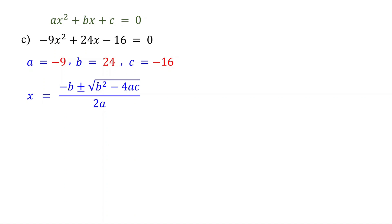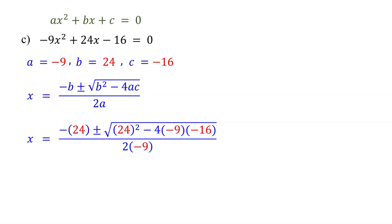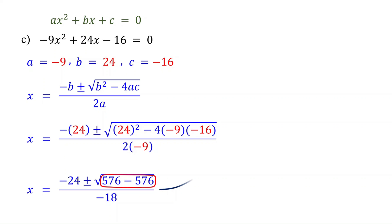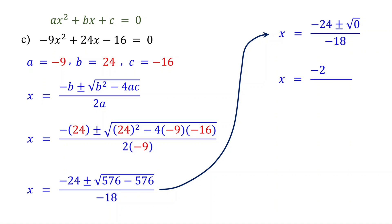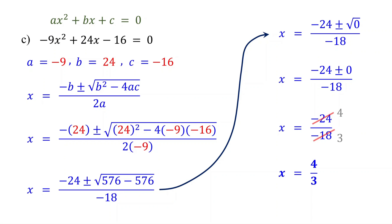Next, write down the quadratic formula. Then, substitute the values of the coefficients into the formula. Now, simplify this. Inside the square root, 24 squared is 576. 4 times negative 9 is negative 36, and negative 36 times negative 16 is 576. In the denominator, 2 times negative 9 is negative 18. The difference inside the square root equals 0. The square root of 0 is 0. Adding or subtracting 0 doesn't change anything, so we are left with negative 24 over negative 18. Dividing both by negative 6 simplifies to 4 thirds. This quadratic equation has only one real solution, which happens when the discriminant equals 0.